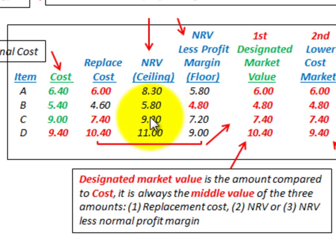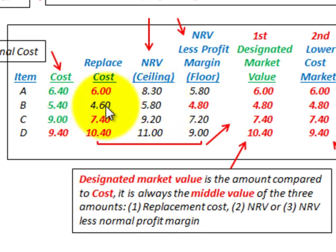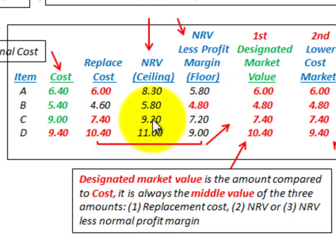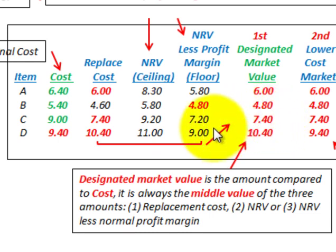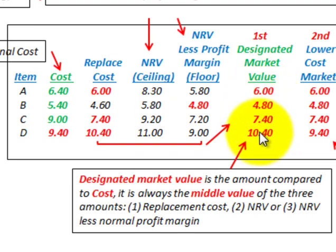For item B, the high value was $5.80 and the low value was $4.60, so the middle amount is the floor value at $4.80 — that becomes the market value for item B. For item C, the high was $9.20 and the low was $7.20, so the replacement cost at $7.40 is the middle value and becomes the market value. For item D, the low was $9.00 and the high was $11.00, making the replacement cost of $10.40 the middle amount and the designated market value.